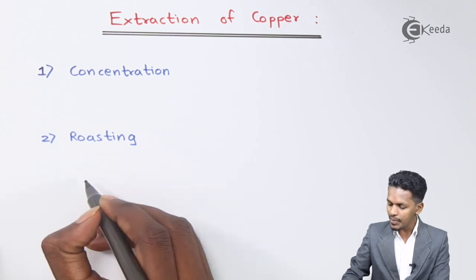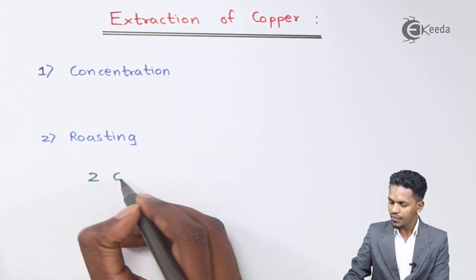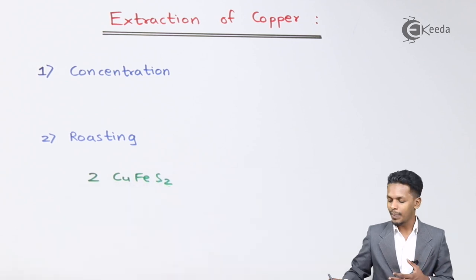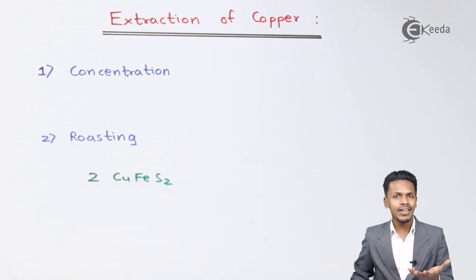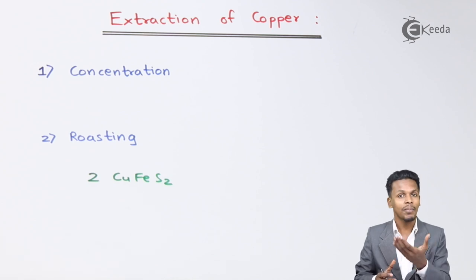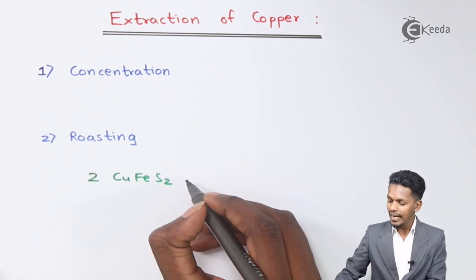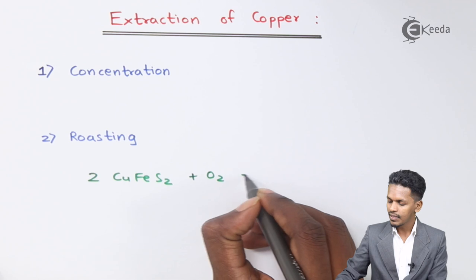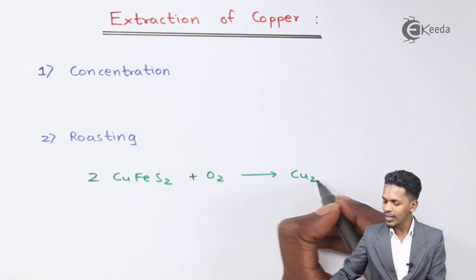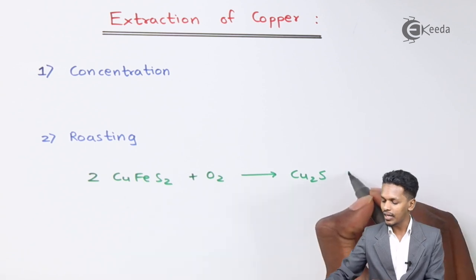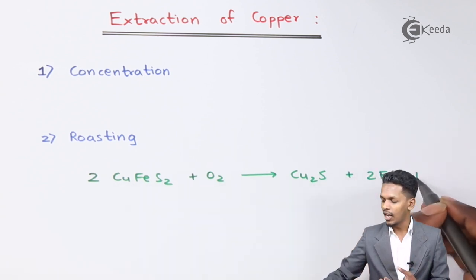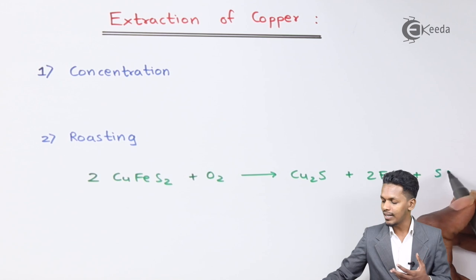In roasting, 2 moles of copper pyrites — CuFeS2 — react with oxygen. Roasting is the process of heating an ore in the presence of oxygen below its melting point. This produces Cu2S (cuprous sulphide) along with 2 moles of FeS (ferrous sulphide), and the by-product SO2.